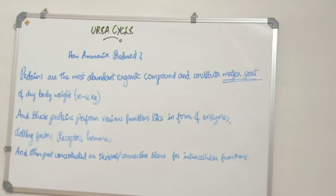Let's look at the production of ammonia in detail. We know that proteins are the most abundant organic compounds and constitute major part of our dry body weight, approximately 10 to 12 kg in adults. These proteins perform various functions like in the form of enzymes. We know that all enzymes are proteins, clotting factors, receptors and hormones.